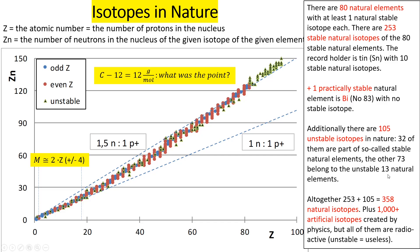It is less problematic that we have a further 73 unstable isotopes belonging to 13 radioactive elements, because radioactive elements are radioactive because they are made of radioactive isotopes. Altogether we have 358 natural isotopes. Physicists have also created 24 artificial elements and over 1000 artificial isotopes, most belonging to stable elements. To my best knowledge, all those artificially created isotopes are strongly radioactive and therefore useless for materials or metallurgical engineers.